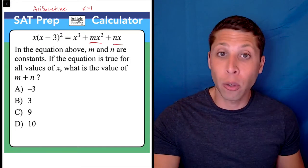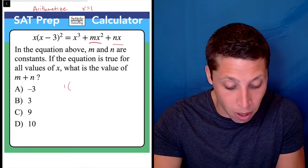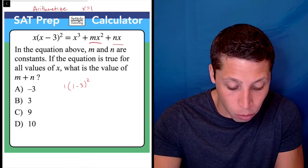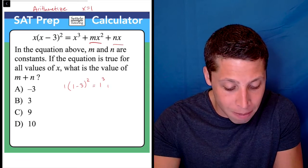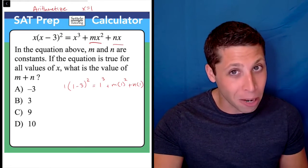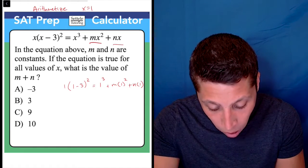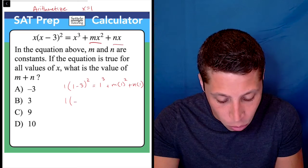This entire equation is going to have all the x's replaced with ones. So it becomes 1(1-3)² = 1³ + m(1)² + n(1). Because there's a lot of ones, this simplifies very quickly. So what we end up with is 1 × (-2)².